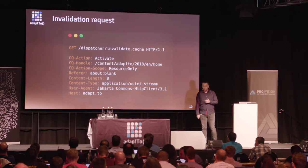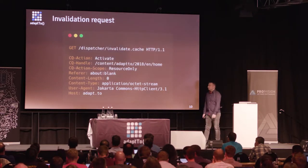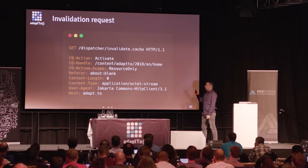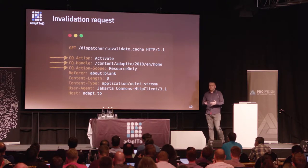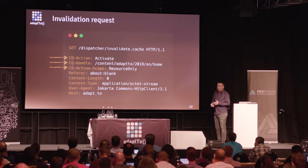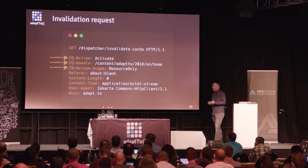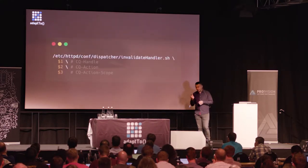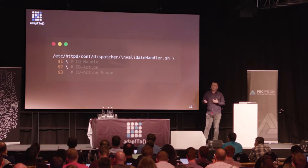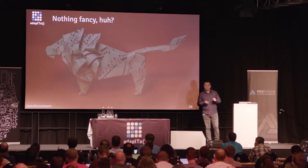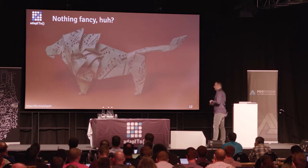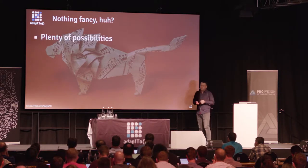An invalidation request contains a few crucial elements specified by three headers: the action — whether you activated or deactivated something; what was activated or deactivated; and the scope of the deactivation. Those three headers are passed on to your script. Some may say that's nothing fancy, but it actually gives you plenty of options.